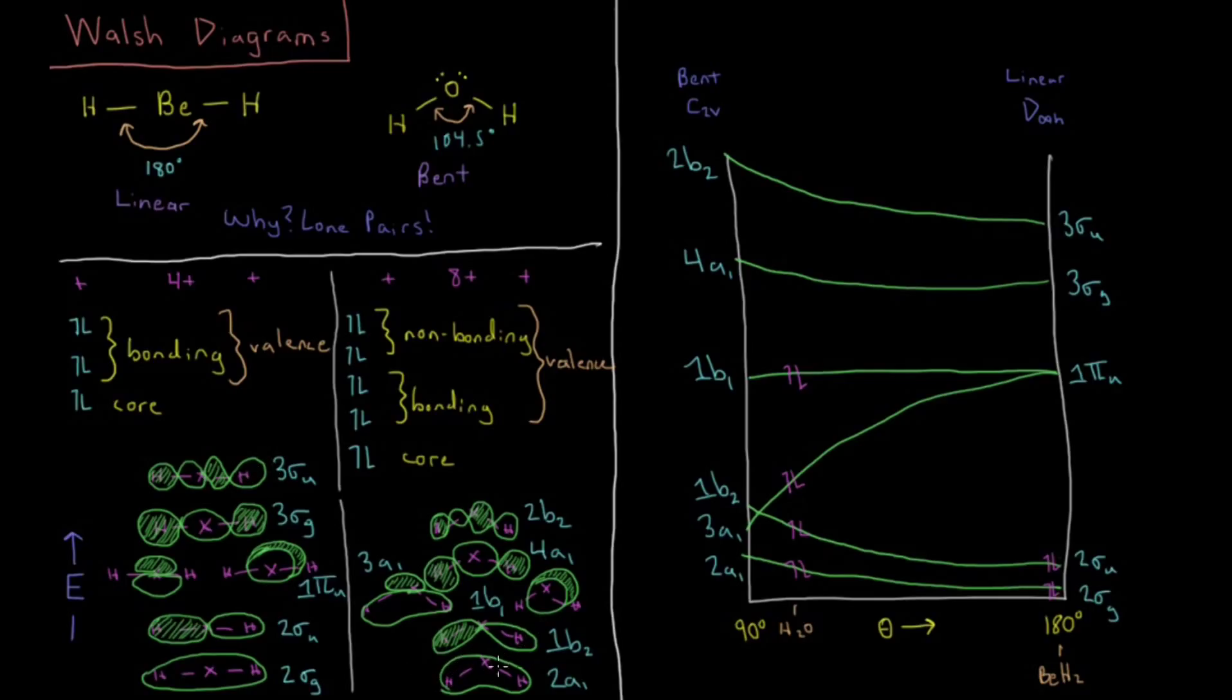Now, if we bend the molecule, we get these orbitals that we see here. These labels are labeled based off of their irreducible representations. That's something that comes from symmetry and group theory, which is discussed in a later chapter.